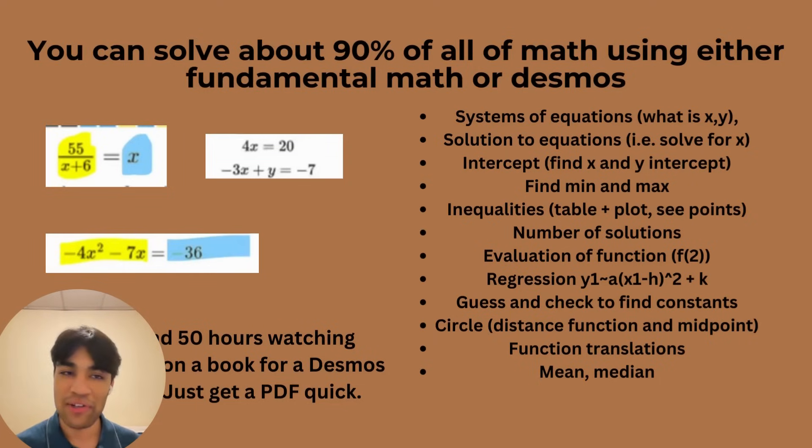For number of solutions, again, you can just plot these equations and look at how many points are intersecting. And that's like your number of solutions. For evaluation of the function, let's say it's like f of x equals 5x plus 4. Type in f of x equals 5x plus 4 onto Desmos. And then in the next line, hit enter and then type in f of 2. And it'll automatically plug in the 2 into your 5x plus 4 equation to get 14. And it'll just give you the answer. Obviously, the questions might be harder, which is where it's helpful to use this evaluation technique.